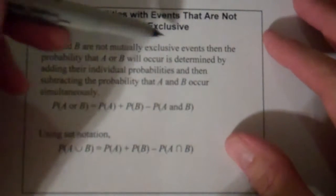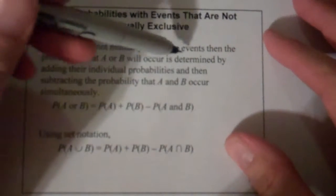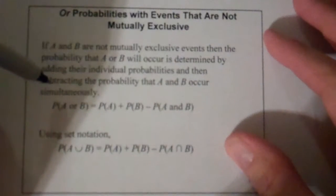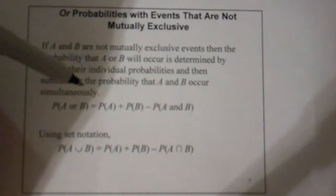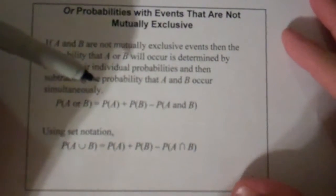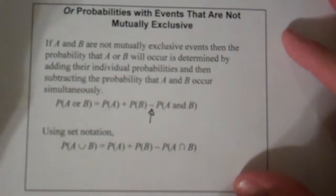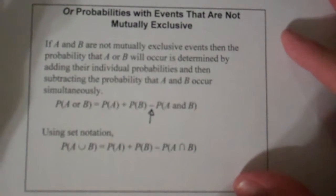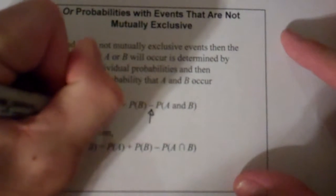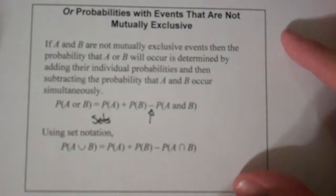What if A and B are not mutually exclusive events? Then the probability that A or B will occur is determined by adding their individual probabilities and then subtracting the probability that A and B occur at the same time — just like with sets, we have to subtract off that overlap.